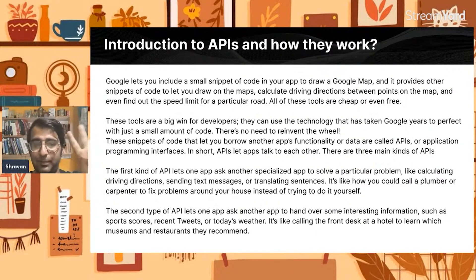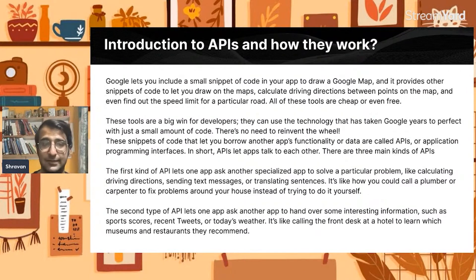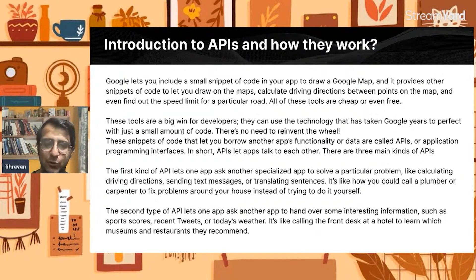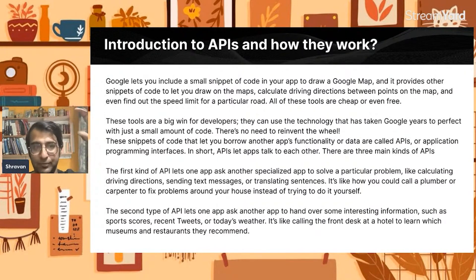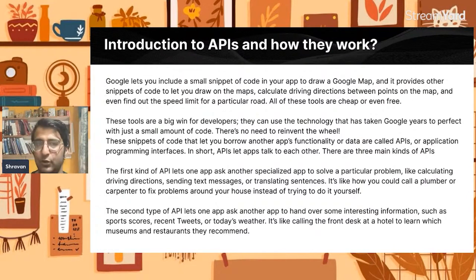There are three main kinds of APIs. The first kind is a computational or software API — it solves a particular problem, like calculating driver directions, sending text messages, or translating sentences. This is how you can effectively use Google Maps in Uber, in Swiggy, in multiple places. The second type is the information API — for example, getting recent tweets, getting scores, or understanding today's weather. CricInfo, for instance, gets all its information from the StarSports API.